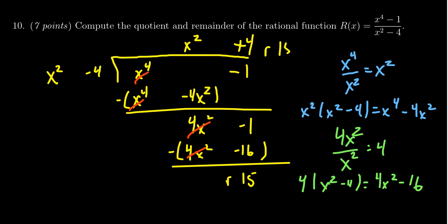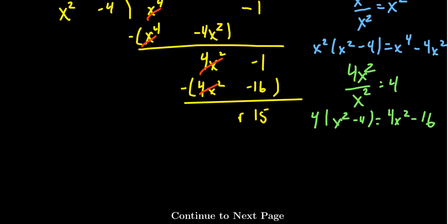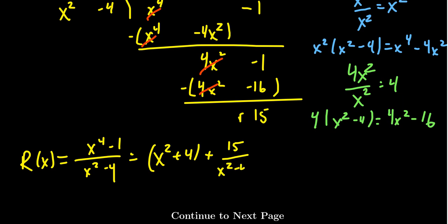You could record it up here if you want. The way I like to write it is r of x equals x to the 4th minus 1 over x squared minus 4, which equals x squared plus 4 plus 15 over x squared minus 4. We should label this: this is our quotient, and this is our remainder. The quotient is x squared plus 4, and the remainder is 15. Thank you.